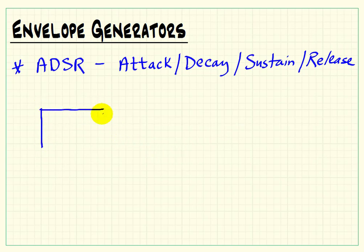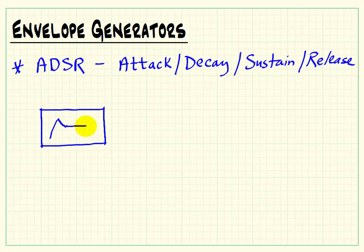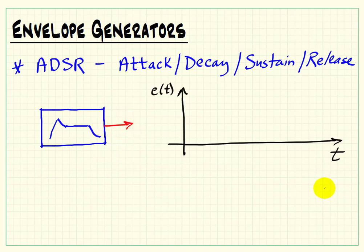With the previous attack-decay version, once it finishes its attack region, it immediately starts in on the decay. ADSR, on the other hand, is going to have the initial transient, but then it can have a region where it remains constant.